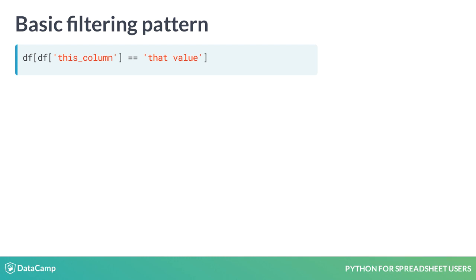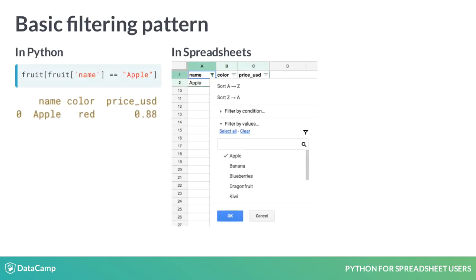Here is a look at what filtering in Python looks like and what its equivalent is in a spreadsheet. Both achieve the same result — the apple row of our fruit data frame. Note it's possible to filter on more than one condition at once, but that is beyond the scope of this course.